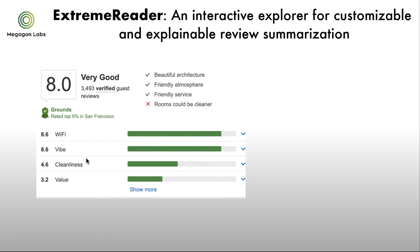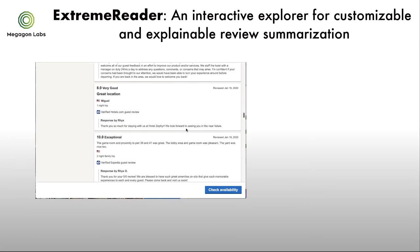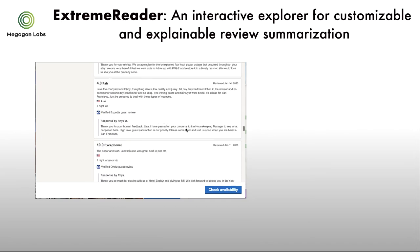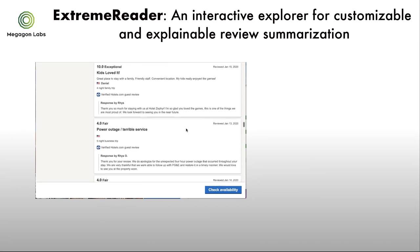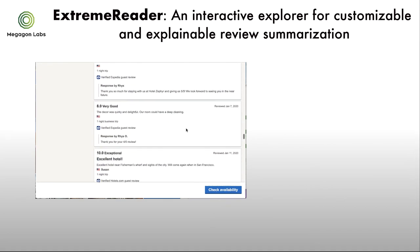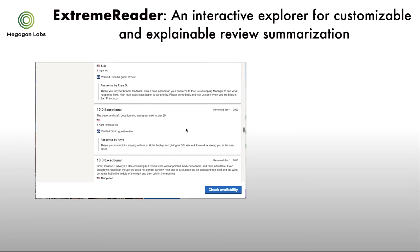While this review summary contains very useful information, however, it is based on pre-defined aspects and it cannot explain — for example, how is the quality of the breakfast, or why is the cleanliness score so low? As a result, users may still have to read an extensive number of original reviews in order to find the right information and the explanations they need. To summarize, through our observation, we identified three major limitations in existing review summaries.